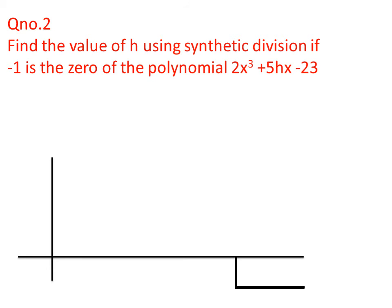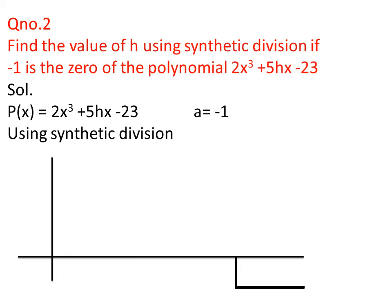This question can also be solved by using the previous method. Here we have to find the value of h using synthetic division if -1 is the zero of the polynomial 2x³ + 5hx - 23. The polynomial is p(x) = 2x³ + 5hx - 23 and a = -1. Using synthetic division, we write the coefficients; if any coefficient is missing we write 0. The coefficient of x³ is 2, the coefficient of x² is missing so we write 0, the coefficient of x is 5h, and the constant is -23. The value of a = -1 is written on the left side.